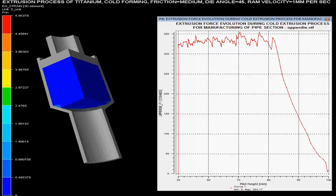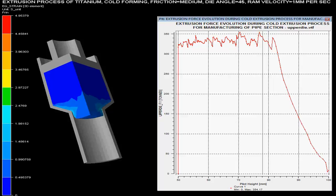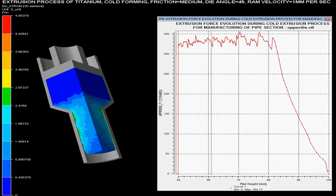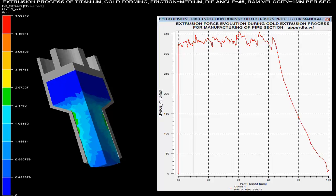In this video, you can see the extrusion process of a titanium solid shaft with 50% reduction in diameter of the billet. The process is cold extrusion where different parameters are controlled on the basis of given specifications.